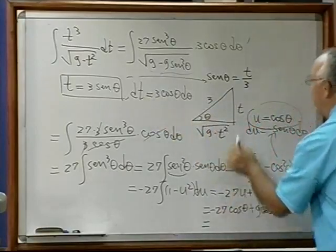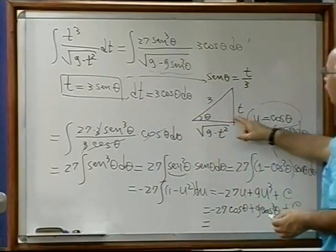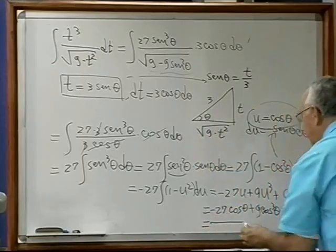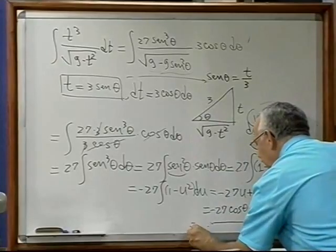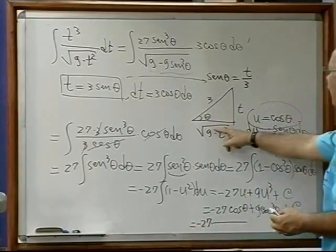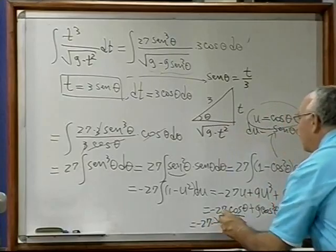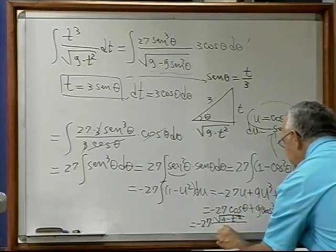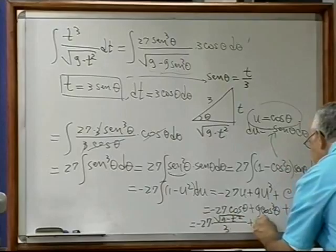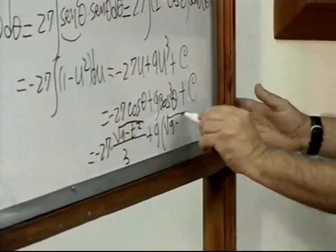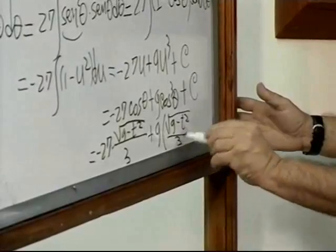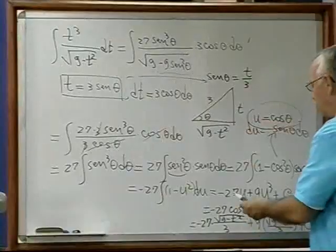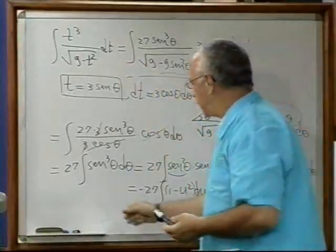Reemplazando u igual al coseno(θ), obtenemos menos 27·coseno(θ) más 9·coseno³(θ) más c. Del triángulo rectángulo, el coseno(θ) es el cateto adyacente sobre la hipotenusa, es decir √(9-t²)/3. Sustituyendo finalmente, obtenemos menos 27·(√(9-t²)/3) más 9·(√(9-t²)/3)³ más c. Simplificando ese resultado, se obtiene el valor de la integral propuesta.